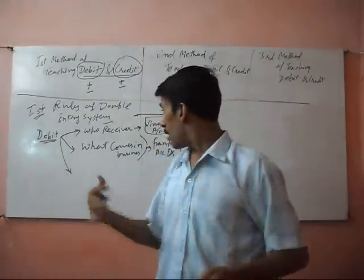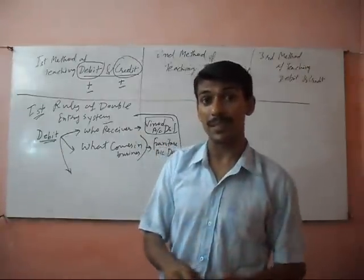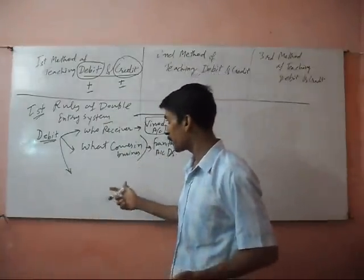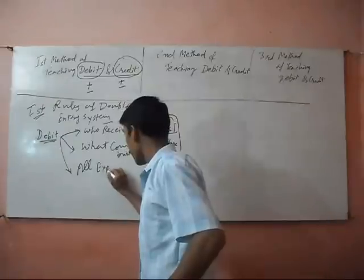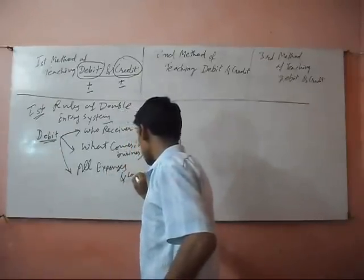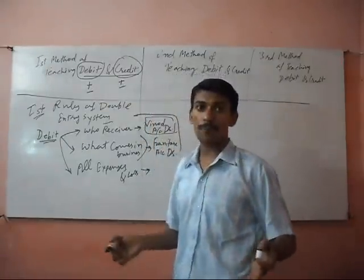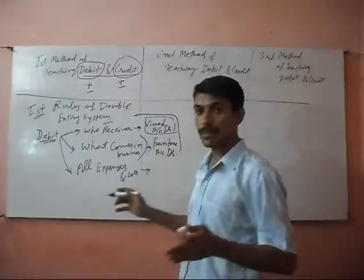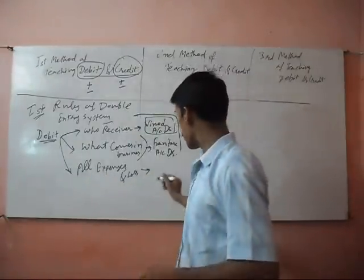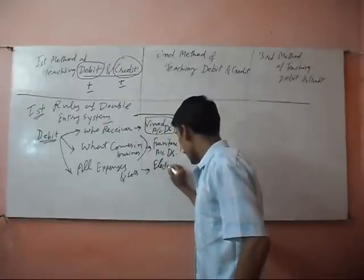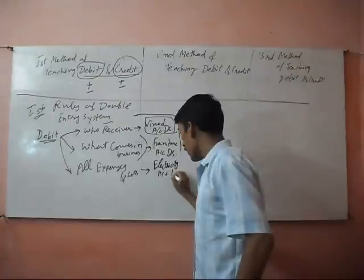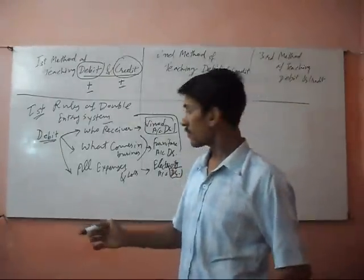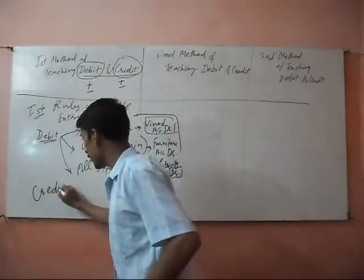If you buy furniture, or your customer pays you money — suppose I pay you — what comes into your business? Cash account is debit. So, what comes into the business is debit. Also, all expenses and losses will be debit. Suppose you have paid an electricity bill — electricity account will be debit, because this is an expense and you consumed the service.